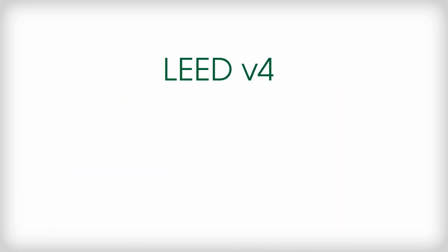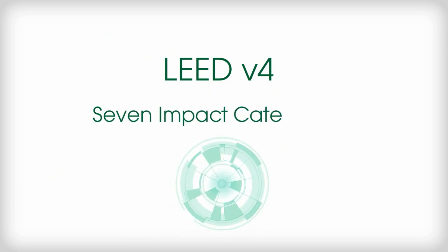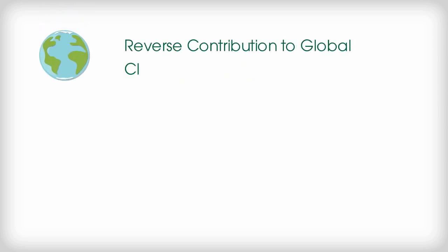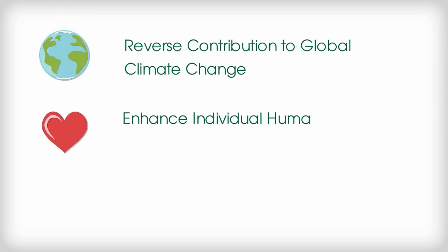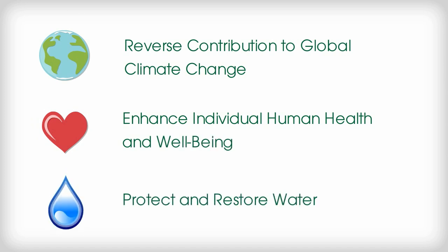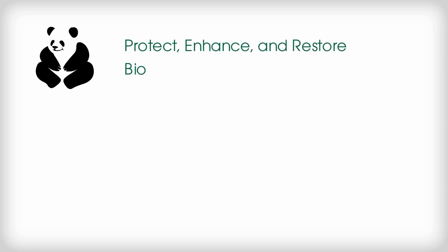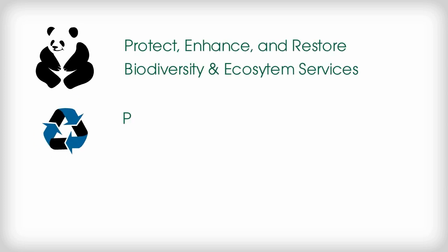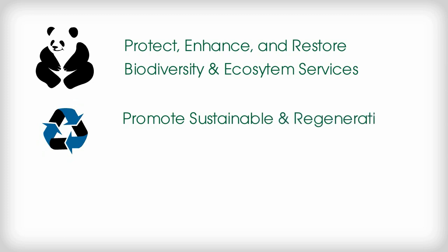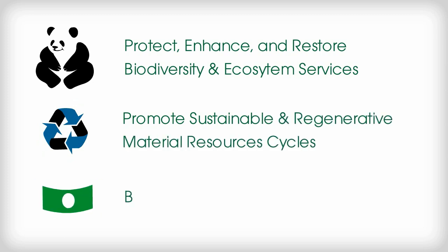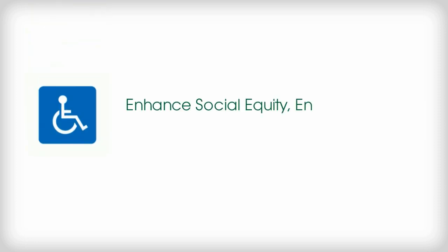In order to create the framework for LEED Version 4, seven impact categories have been developed. The impact categories are: reverse contribution to global climate change, enhance individual human health and well-being, protect and restore water resources, protect, enhance, and restore biodiversity and ecosystem services, promote sustainable and regenerative material resources cycles, build a greener economy, and enhance social equity, environmental justice, and community quality of life.